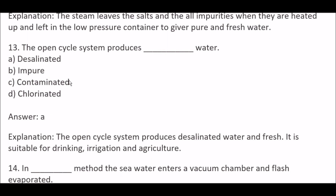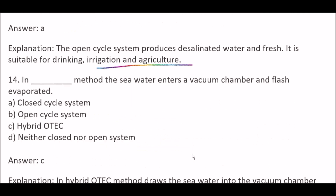Next question: The open cycle system produces blank water — Option A, desalinated; Option B, impure; Option C, contaminated; Option D, chlorinated. Right answer is Option A, desalinated. The open cycle system produces desalinated fresh water, which is suitable for drinking, irrigation, and agriculture.